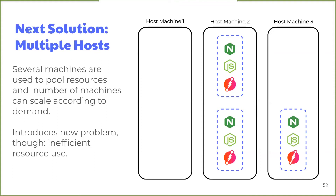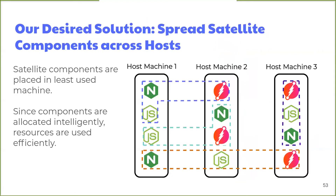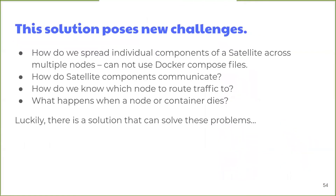We chose horizontal scaling because it is more cost-efficient and can scale indefinitely. Several machines pool resources together and the number of machines scales according to demand. However, there is still a problem: inefficient resource use. If machine 2 is at its maximum capacity while machine 1 has plenty of room to spare, it would be nice if one of the Satellites from machine 2 could be placed into machine 1. Even better would be if individual Satellite components could be deployed onto whichever machine is least used at the time to maximize resource efficiency — distributing the individual components of a single Satellite across machines.